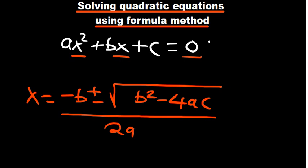So a is the coefficient of x squared, b is the coefficient of x, and c is a constant. So now you know what to plug in in the formula.